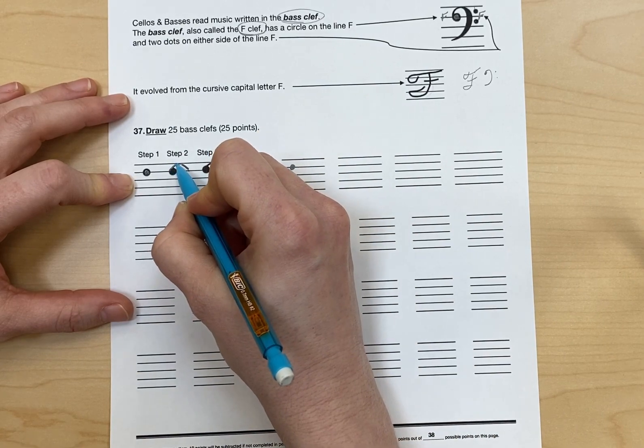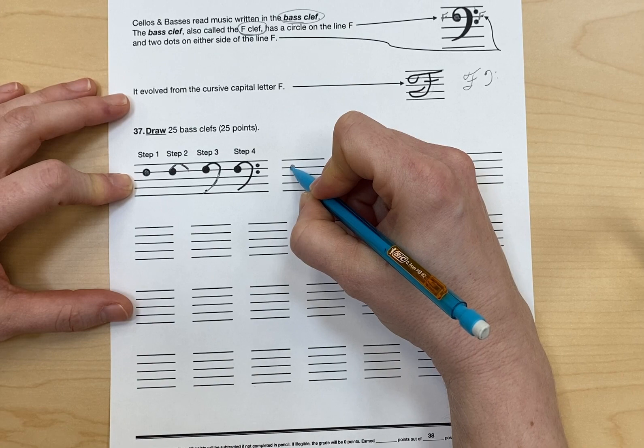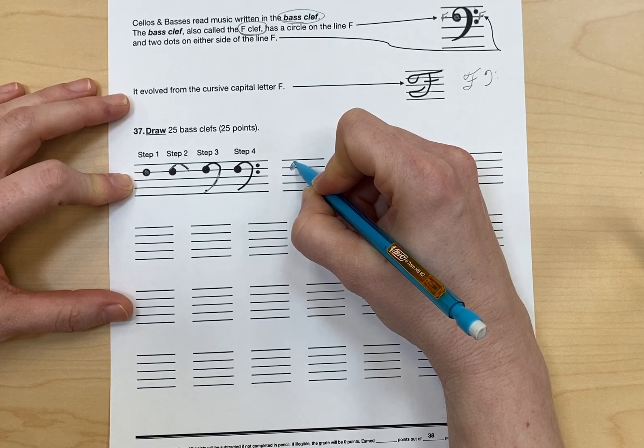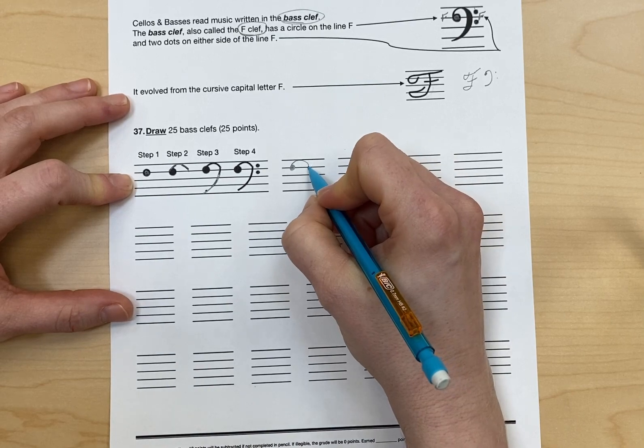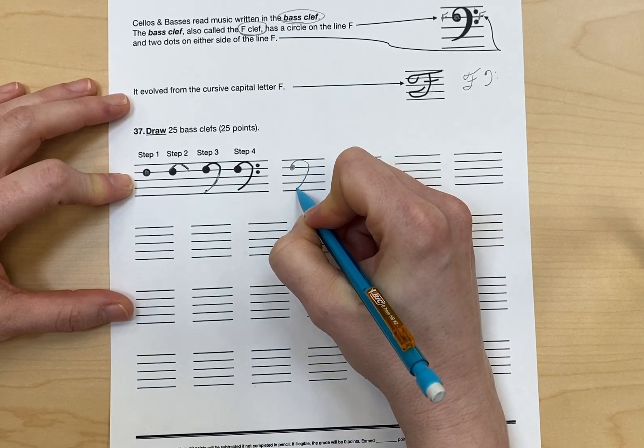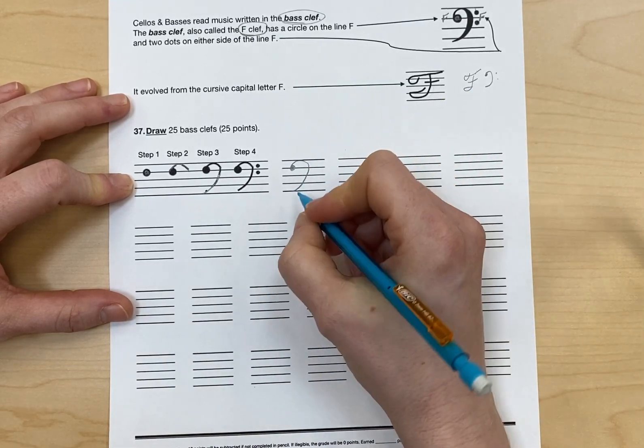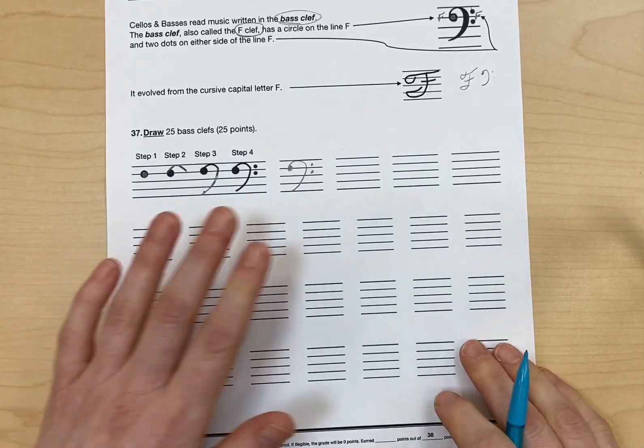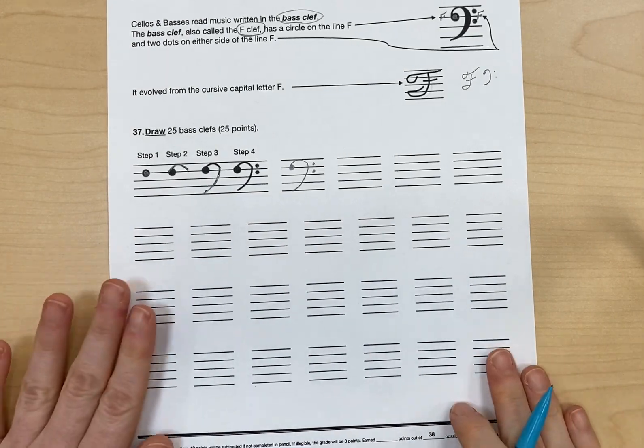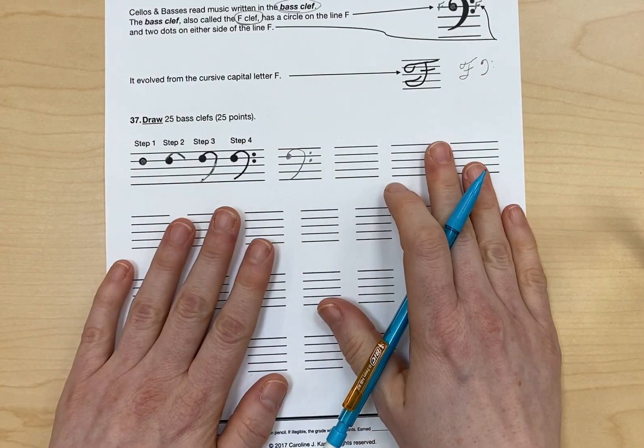it comes up from over on the side. It doesn't come up from the middle. So I'm going to come up from over here. I'm going to come up and around back down. That's step two. And then step three would be to come all the way down. And step four is to draw my two dots. And that's how we draw a bass clef. So now you can go and finish drawing all of these.